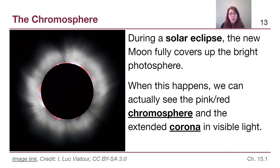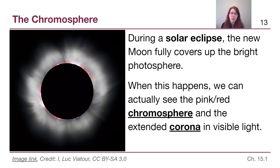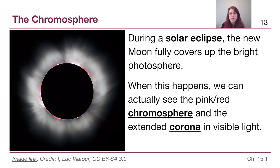When we wait for a solar eclipse, the new moon fully covers up the bright photosphere and we are actually able to see the other layers in visible light as well — only during a solar eclipse, because normally they are outshone by the photosphere. In eclipse images, we can see a pinkish-reddish color, which is the chromosphere, and the rest of the visible light around it is the corona.